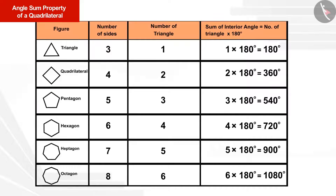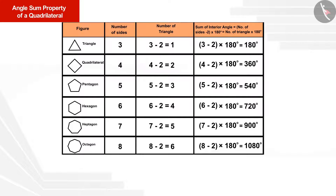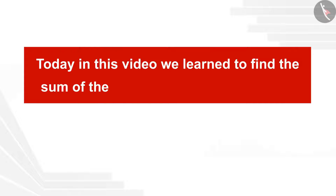Filling in the table, we see that the number of triangles formed in each polygon is 2 less than the number of sides. This gives the formula for the sum of all interior angles of a polygon with n sides: (n − 2) × 180 degrees, where n is the number of sides.